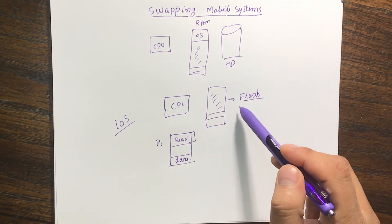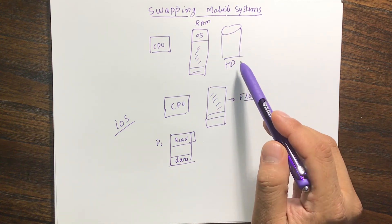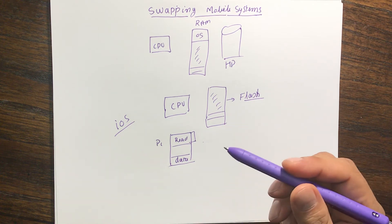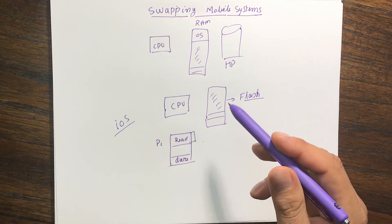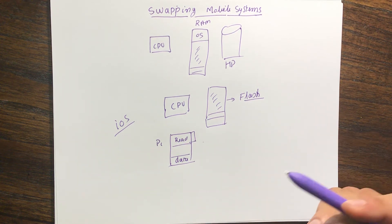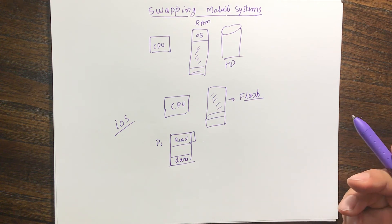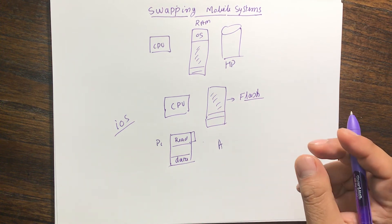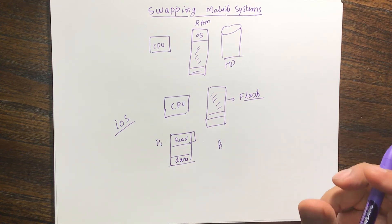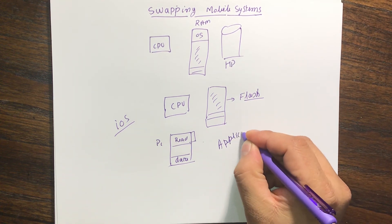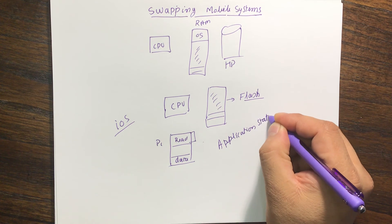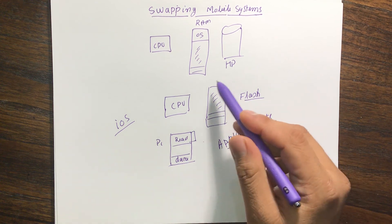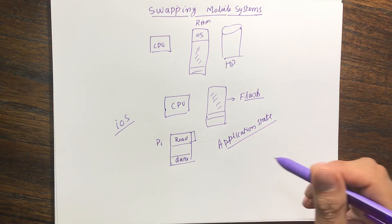In mobile systems, you don't have the luxury of a large hard disk to swap in and out. Android does something similar to iOS — it asks processes to relinquish memory, and if that's not enough, it terminates them. But before terminating a process, Android saves the application state, and when enough RAM becomes available, it restores the application from that saved state.